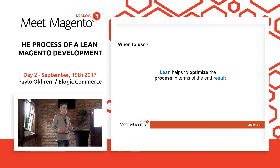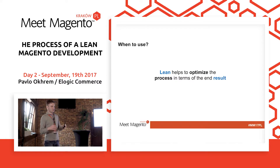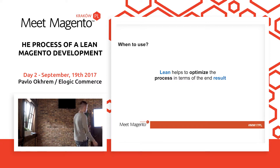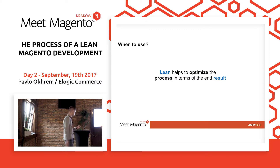You may ask when to use the Lean approach. Lean really helped optimize the process in terms of the end result. When you see that your development process is more like doing regular things and delivering on time, you always forget about the end value for the customer. In the ideal world, you have to combine process and result optimization. That's why we were thinking of Lean and implemented it successfully.